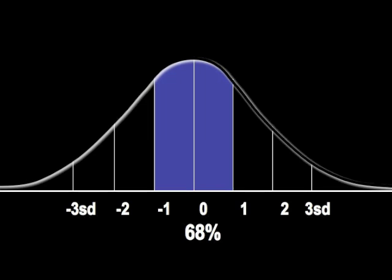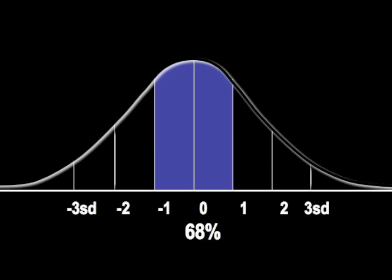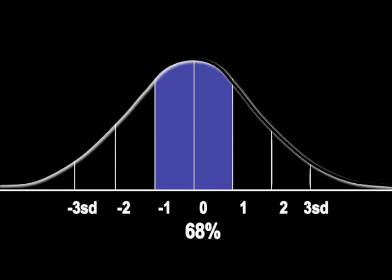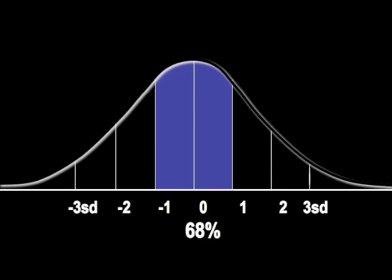Basically, if you have a normally distributed variable, we know that 34% of the cases will fall between the mean and one standard deviation below the mean, and 34% of the cases will fall between the mean and one standard deviation above the mean. When we add those two together, we find that 68% of the cases on a normally distributed variable are within plus or minus one standard deviation from the mean.